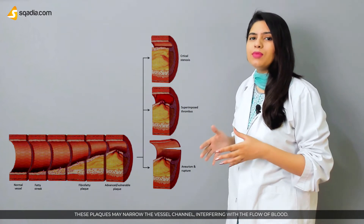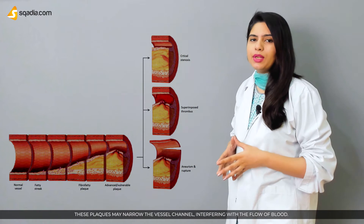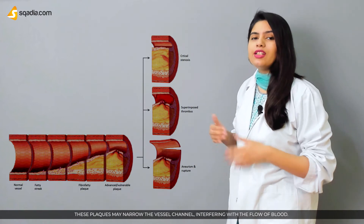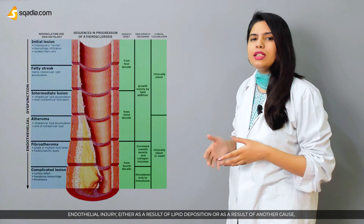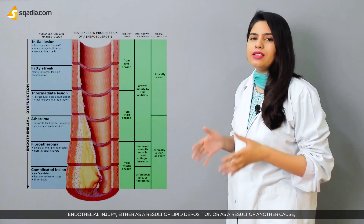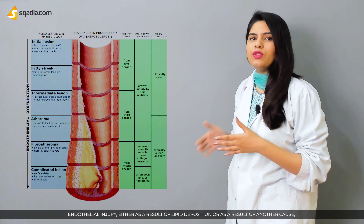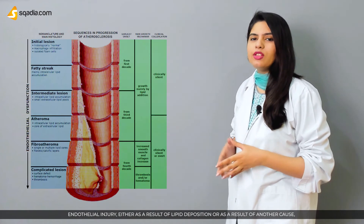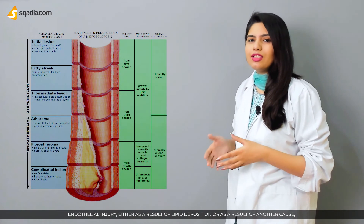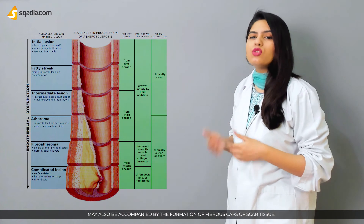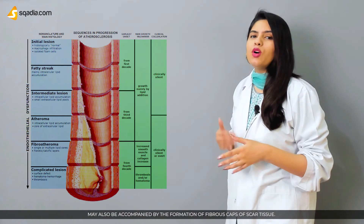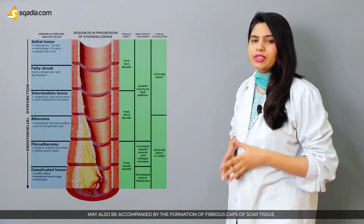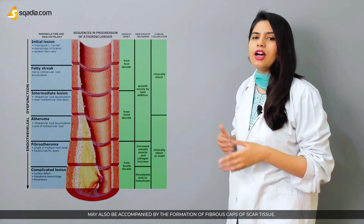These plaques may narrow the vessel channel, interfering with the flow of blood. Endothelial injury, either as a result of lipid deposition or another cause, may also be accompanied by the formation of a fibrous cap of scar tissue.